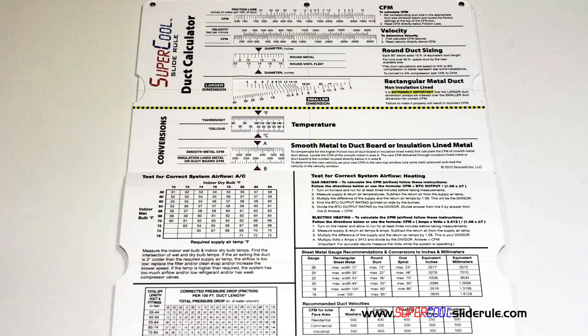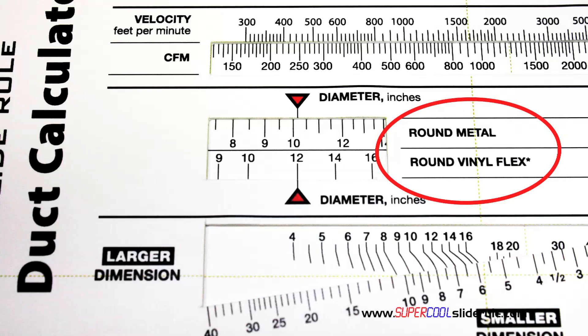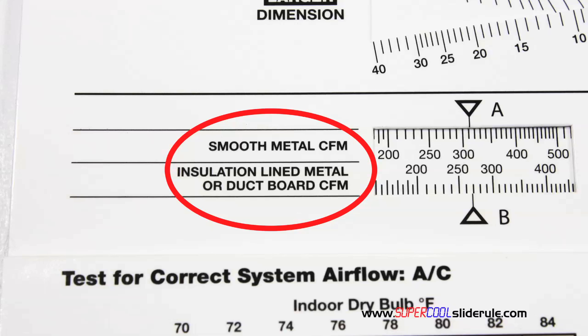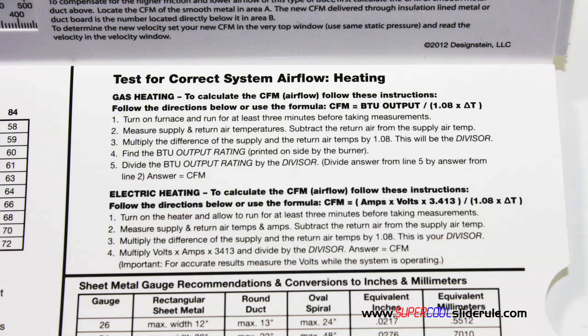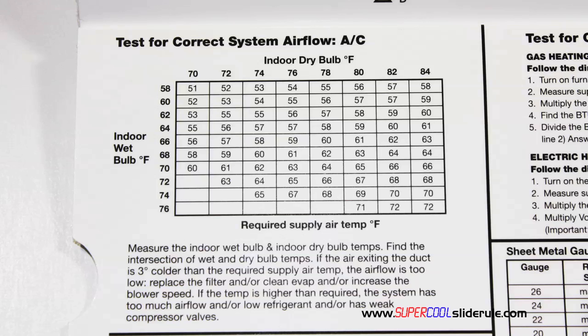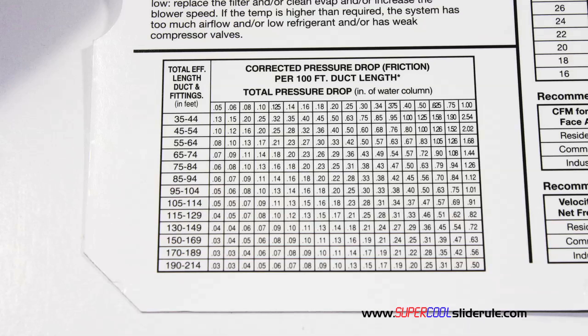Inside is packed with even more information. It performs sizing of both metal and flexible duct. It has the only direct reading conversion from smooth metal to insulation-lined metal we've ever seen. The majority of technicians have never been taught that if the insulation is on the inside of the ductwork, you cannot size it with a regular duct calculator. It has step-by-step directions for determining airflow through a gas furnace, electric furnace, or an air conditioning unit. It has pressure drop multipliers for ductwork, as well as recommended velocities.